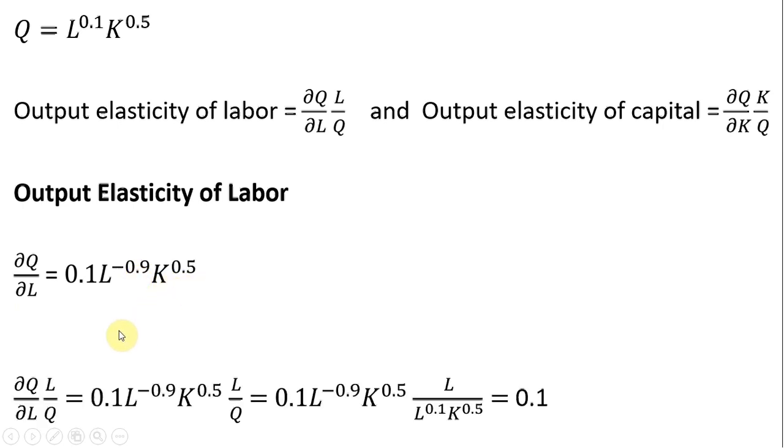Setting up the equation, plugging in the marginal product of labor, multiplying that by L divided by Q. We're going to make a substitution here. What is Q? Q is just the production function, so we'll plug that result back in, and now we're going to simplify.